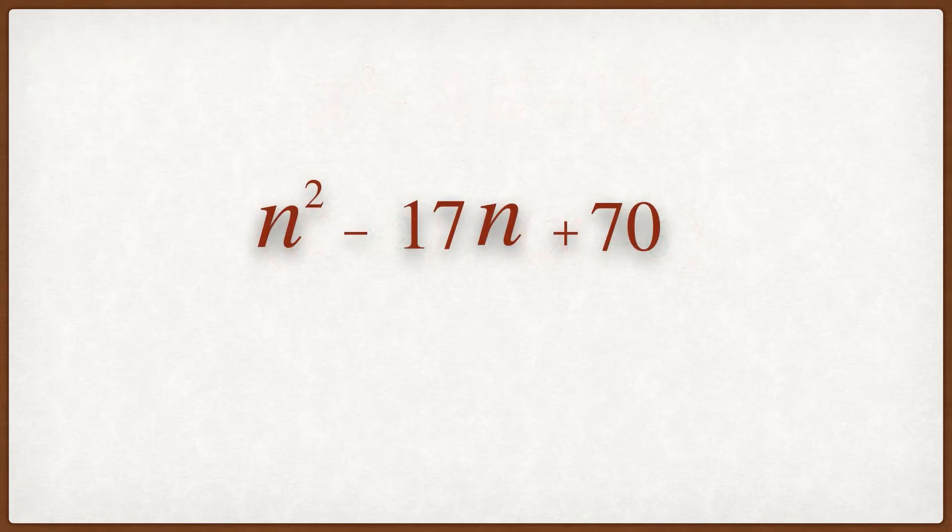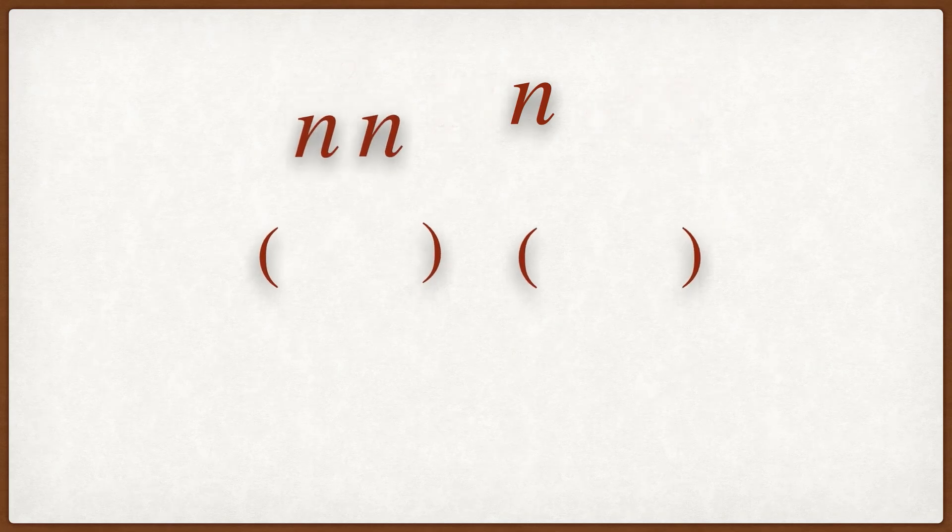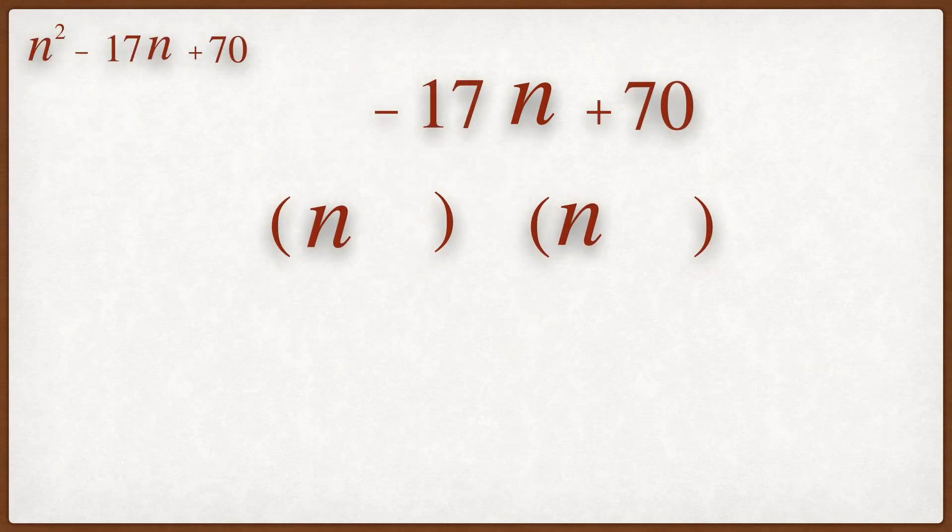Consider another example. Recognize this term is a quadratic because the highest power on the expression is n squared. So we start with two brackets. Two terms multiply to give n squared are n and n.